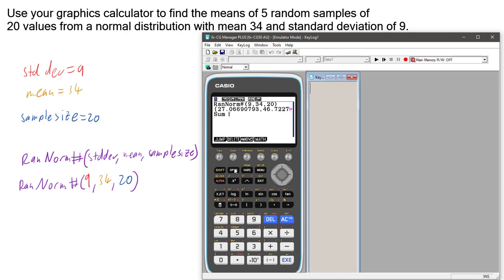So we can put in SUM and we can put in our RANNORM. So that means we've got to go back to OPTION and over to PROB and RANNORM. And then we can go 9, 34, 20, close the bracket. And that will add them all up for us.